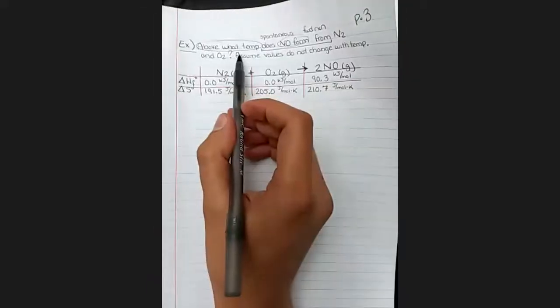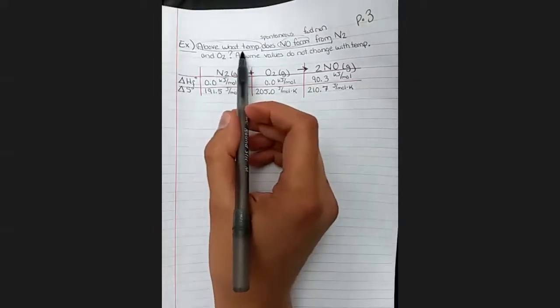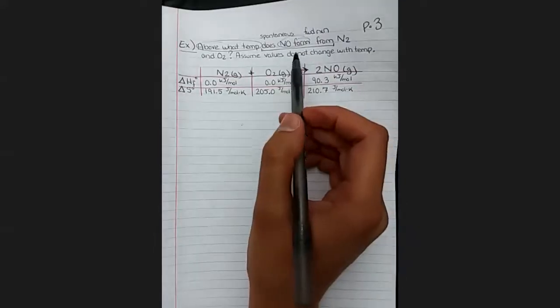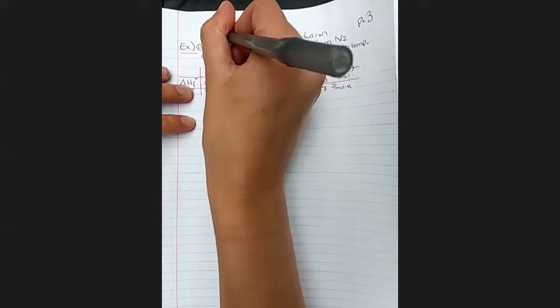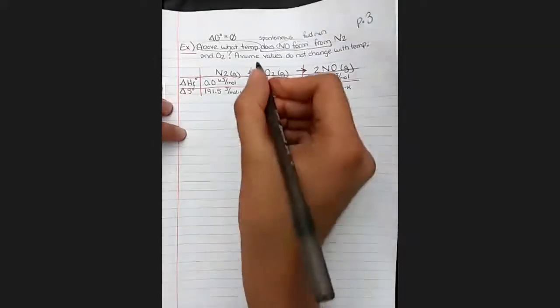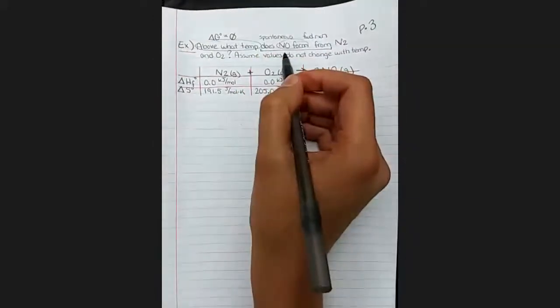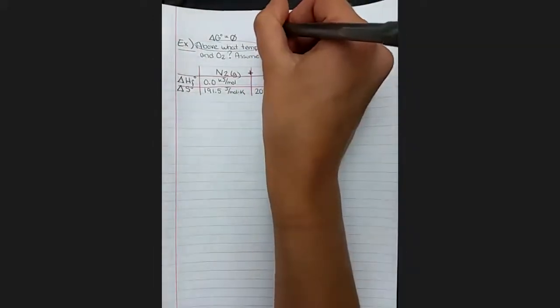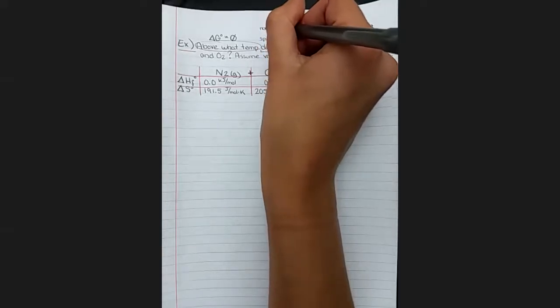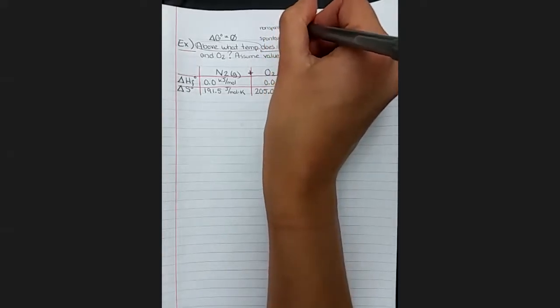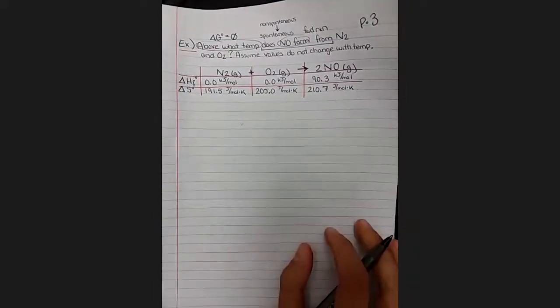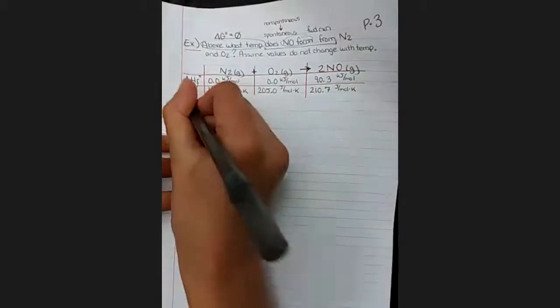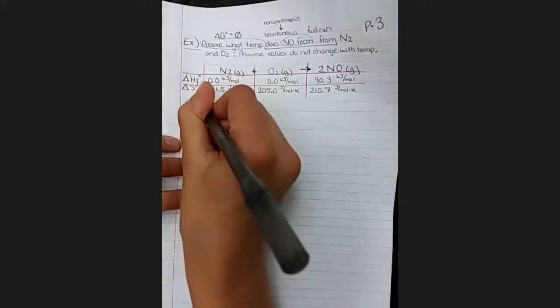So what this question is really asking when it says above what temperature does this form is at what temperature is the standard delta G equal to zero? And at what temperature does it switch from being non-spontaneous where it doesn't form to being spontaneous where it does form? Okay, so now that we've digested that question a little bit, let's move forward.